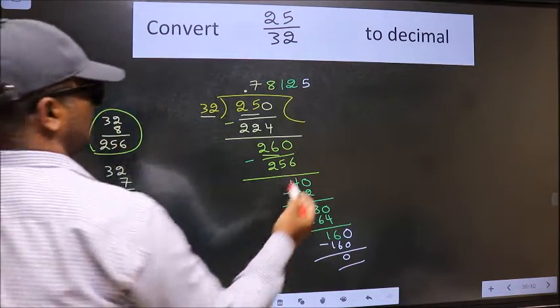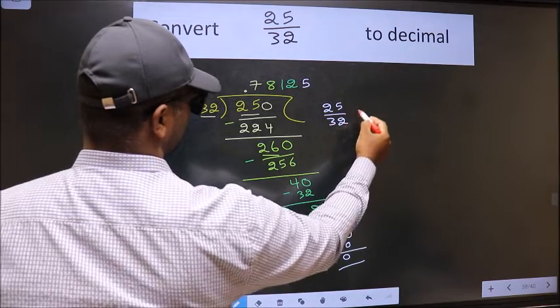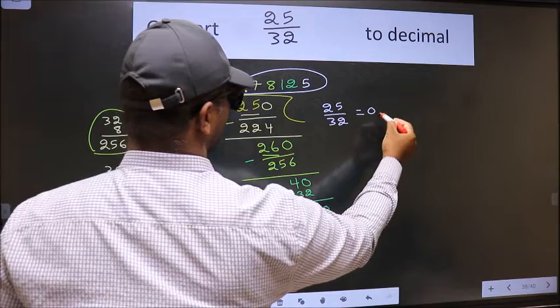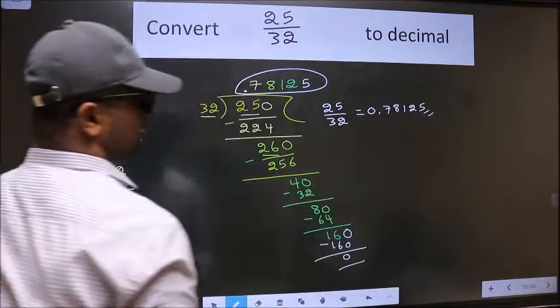Therefore, the decimal of 25 by 32 is this one: 0.78125. This is our answer.